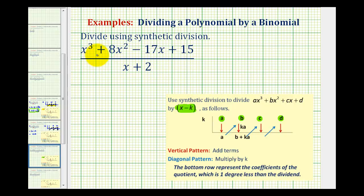In our case, notice we have a degree 3 polynomial with all terms in descending order. We have a degree 3 term, a degree 2 term, a degree 1 term, and a constant. The coefficient of the first term is 1, so our coefficients are 1, positive 8, negative 17, and positive 15.